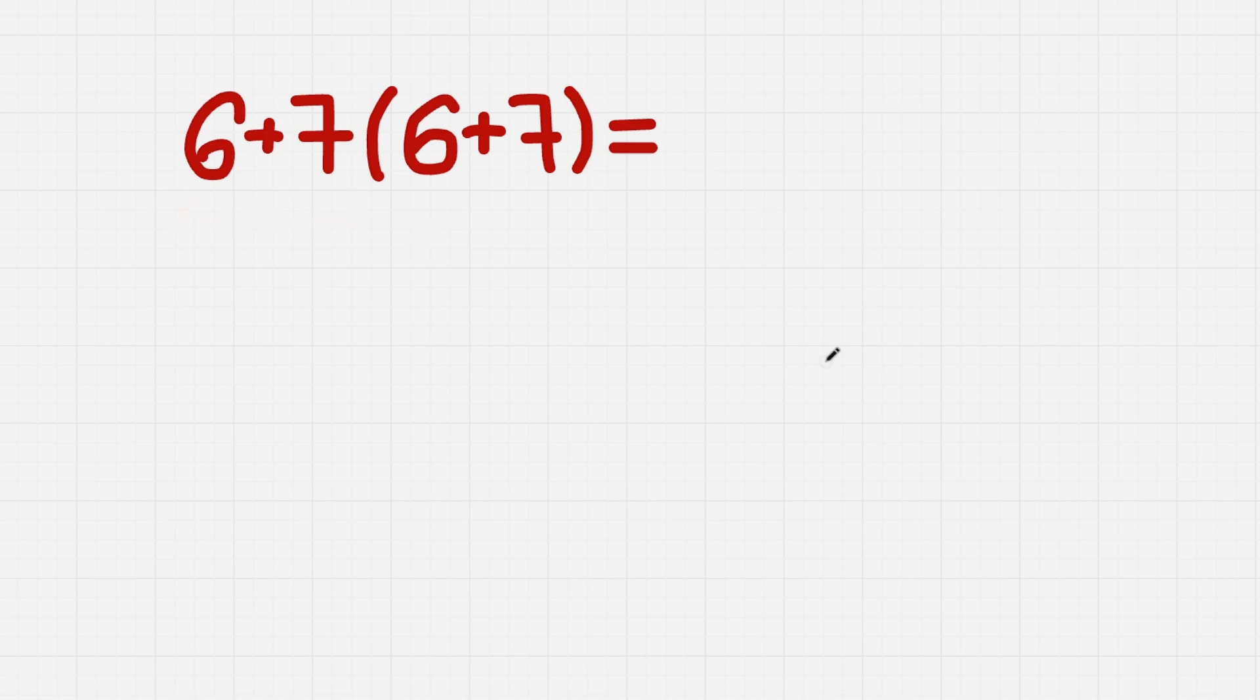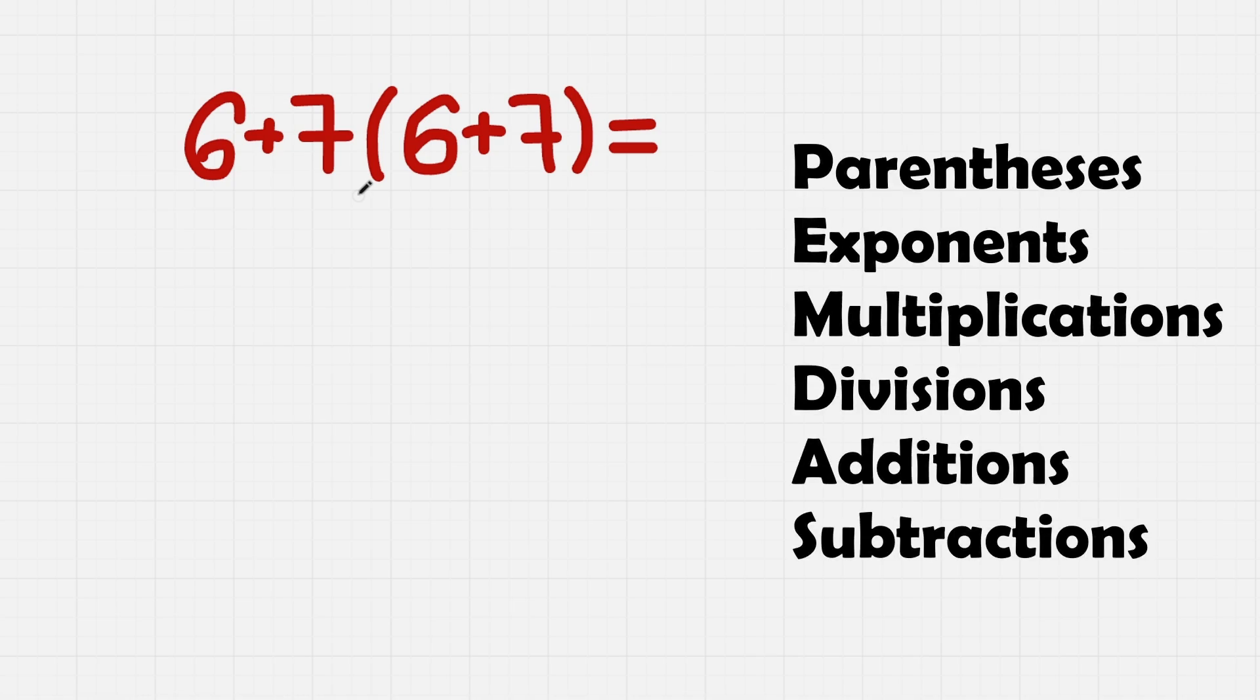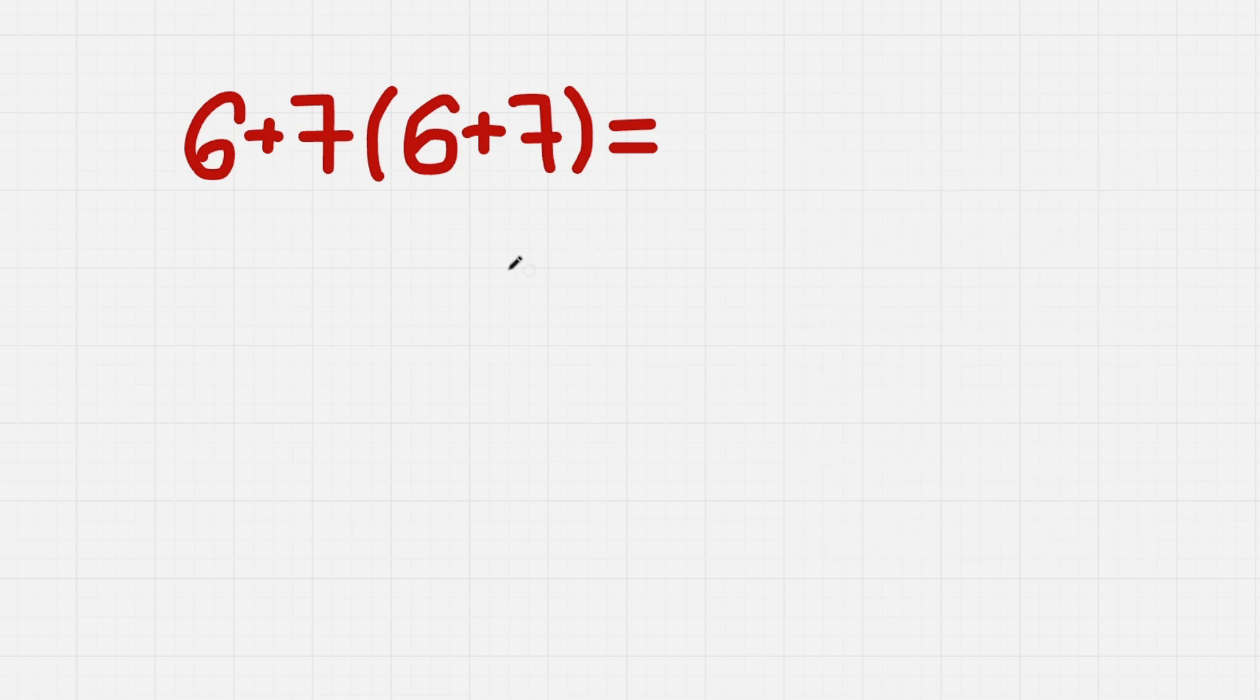To actually correctly solve all of that, we need to use the PEMDAS rule, which says that we need to solve the parentheses first. So what we do is we solve the parentheses first. So 6 plus 7 is 13.